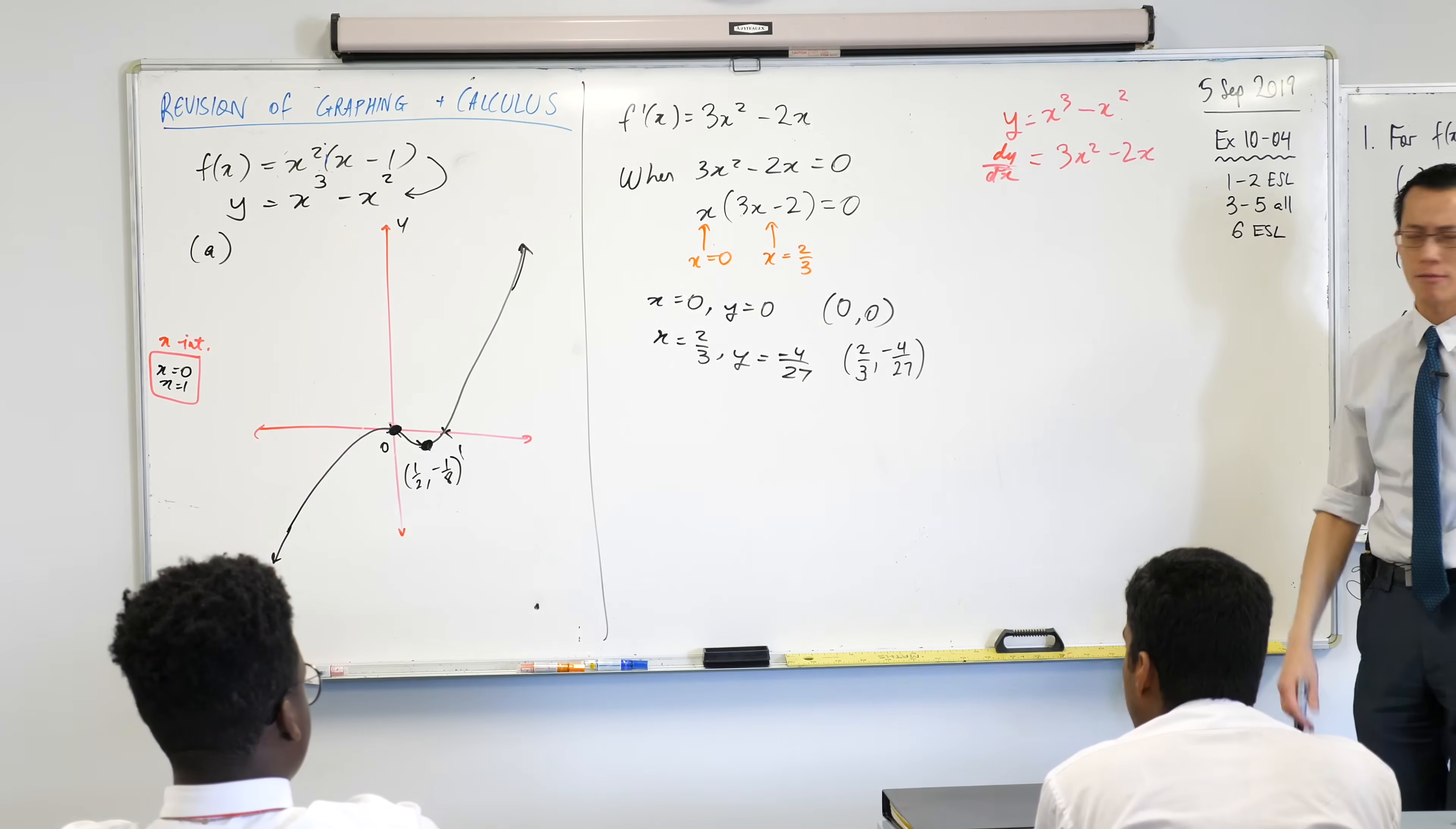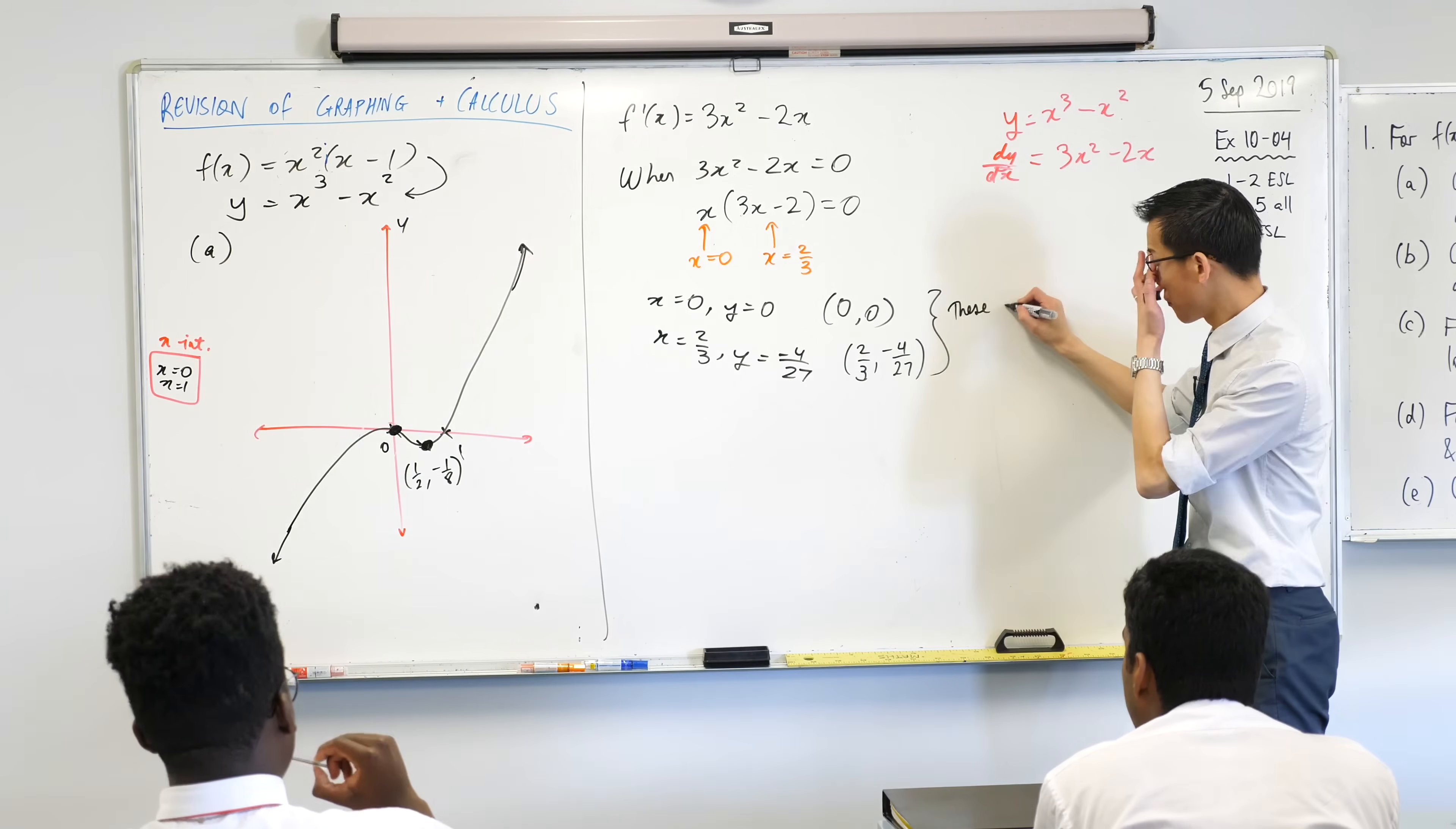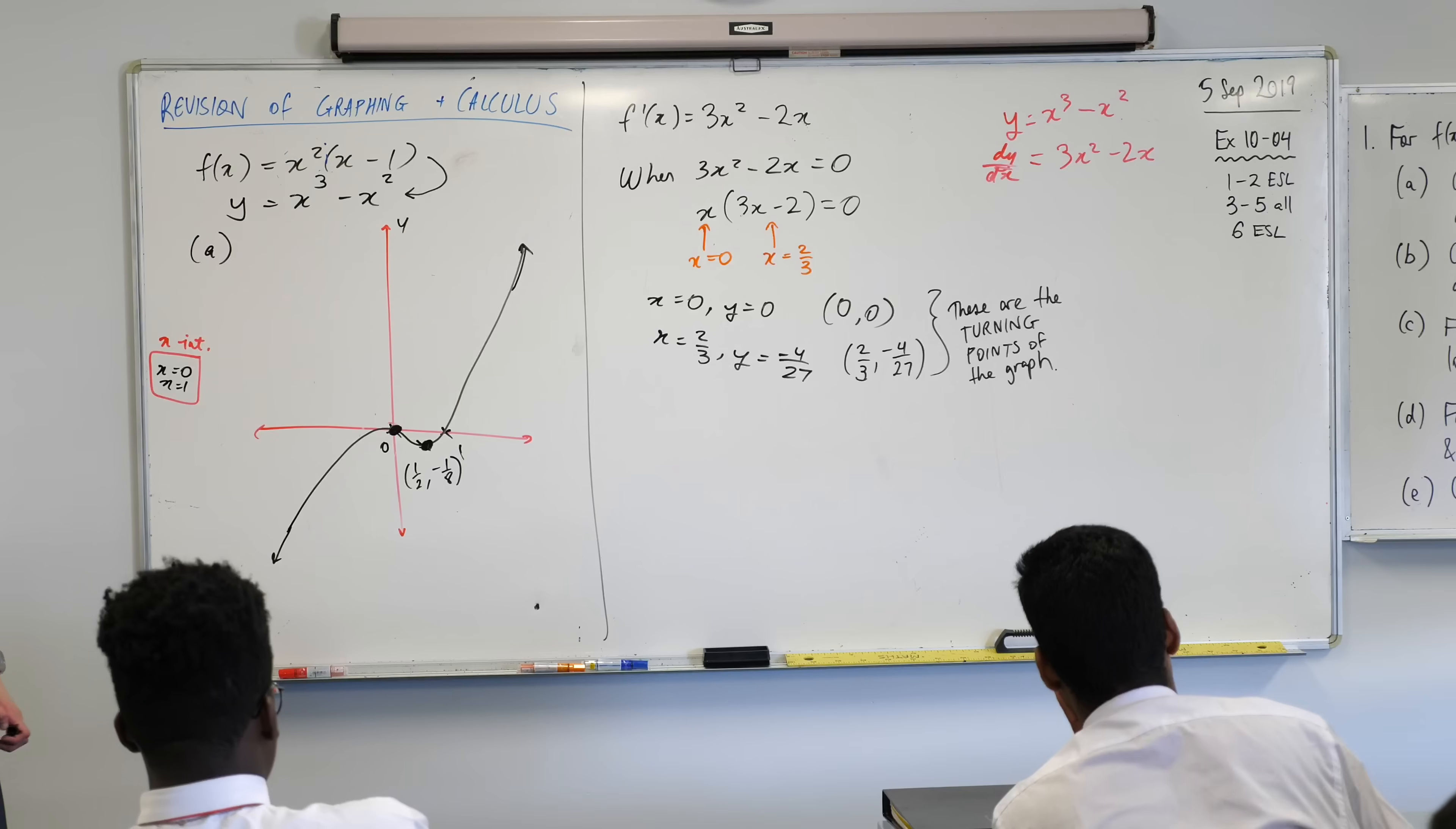So what you actually found is you've found the spot where the graph turns around. Max was mentioning looking for a vertex. On a parabola it's easy to find the vertex, it's just in the middle. But a cubic doesn't have a middle in the same way. You have to use calculus to do that. Any questions on that? Does that make sense? You might like to make a note for yourself. These are the turning points of the graph. What we actually found were stationary points. We'll get into the difference a little bit more later on.